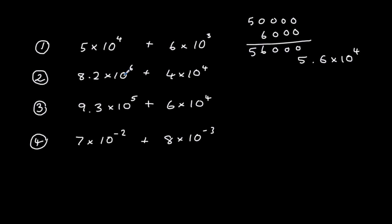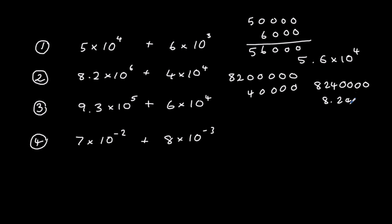Same process for the second question: 8.2 times 10 to the power of 6, times 10 once, twice, three, four, five, six; and 4 times 10 to the power of 4 — giving 8,240,000, which is 8.24 times 10 to the power of 6. We could follow that process for all of the numbers and get the same answers: 9.9 times 10 to the power of 5, and 7.8 times 10 to the power of minus 2.